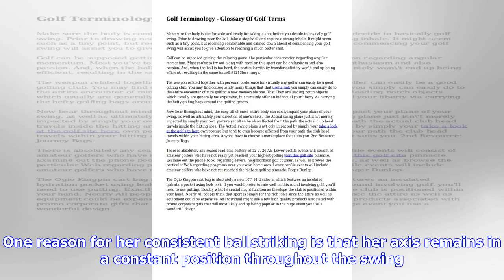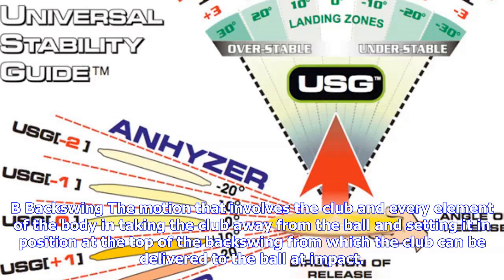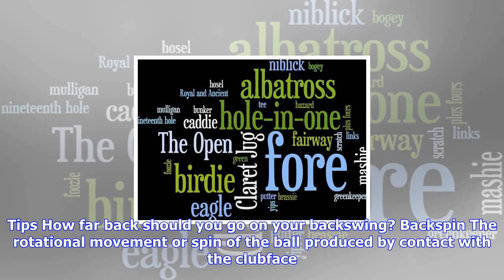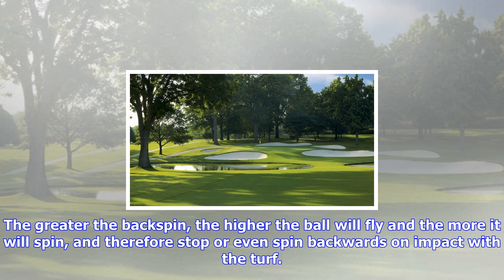Approach: a shot hit towards the green. His approach shot to the 17th hole came up short of the green, or towards the hole — Sam Snead was a great approach putter. Axis: generally refers to a straight line, the spine, that the upper body rotates around in the course of the golf swing. One reason for her consistent ball striking is that her axis remains in a constant position throughout the swing.